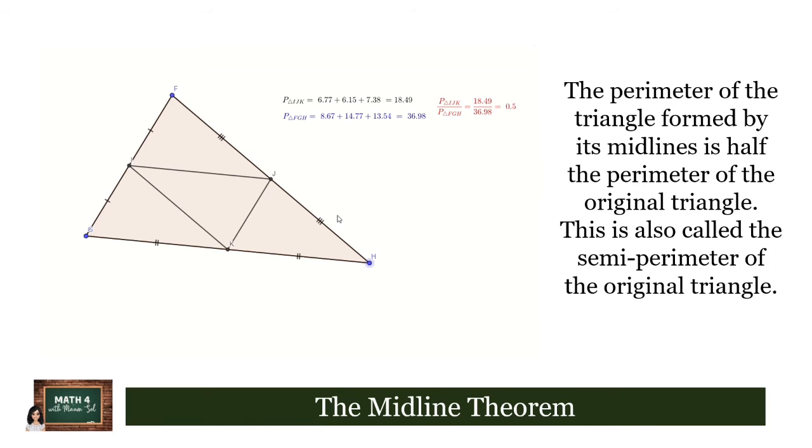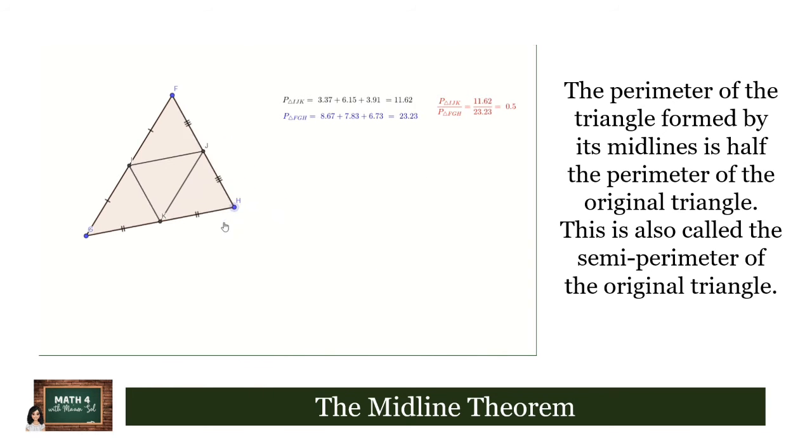Let us also investigate the perimeter of the triangle formed by the midlines of a triangle. So in this triangle here we use the GeoGebra app to compute the perimeter of triangle IJK formed by the midlines of triangle FGH. We will also compute the perimeter of triangle FGH, and later on we will observe the ratio between these two. So initially the ratio is 0.5 or one-half.